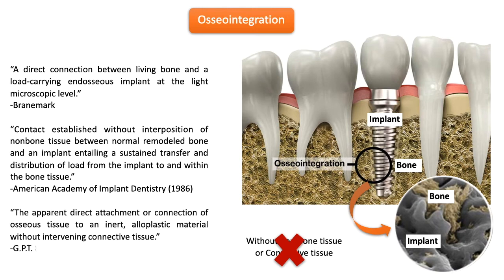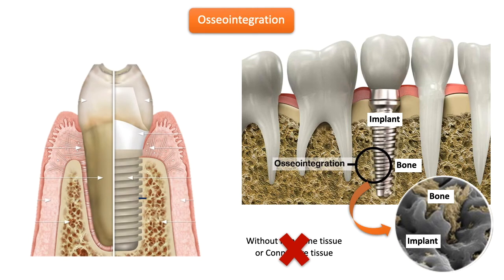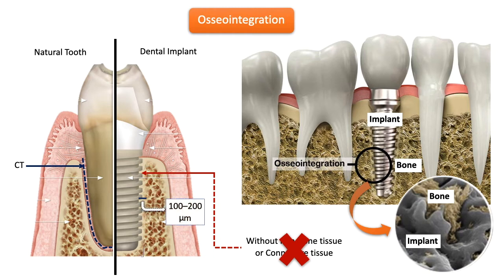The success of implant surgery is determined by the biomechanical quality of bone tissue located at a distance of less than around 100 to 200 microns from the implant surface. The bone-to-implant contact ratio (BIC) in successful oral implants varies between 60% and 99%, and this BIC ratio is correlated with the biomechanical properties of the bone-implant interface, which increases during bone healing.